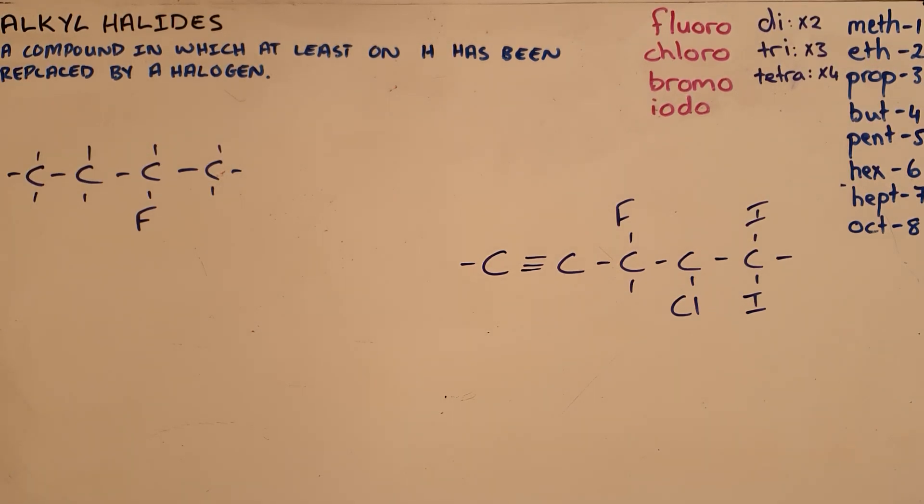Alkyl halides are branches of organic compounds where at least one hydrogen has been replaced by a halogen. The halogens are fluorine, chlorine, bromine, and iodine. Since these are seen as branches, they are added to the name